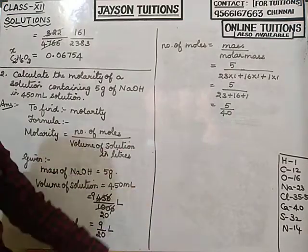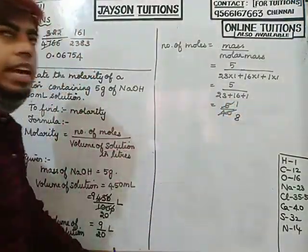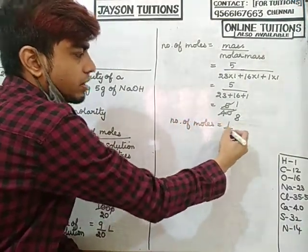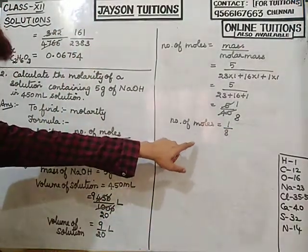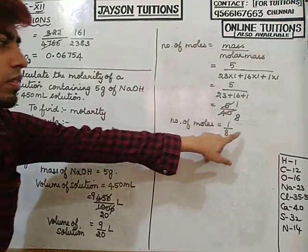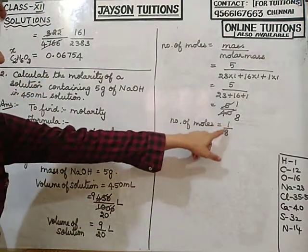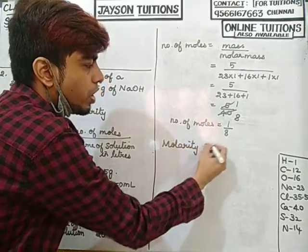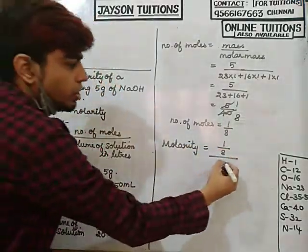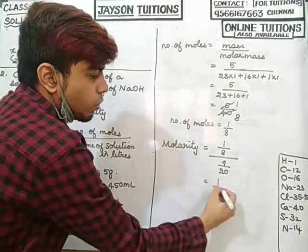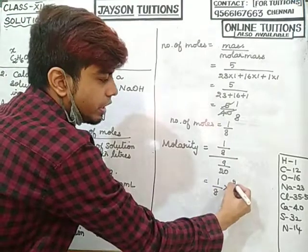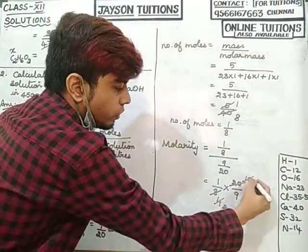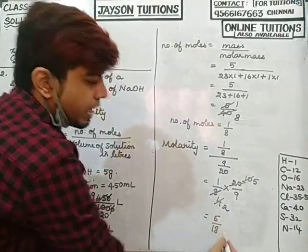5 divided by 40 simplifies to 1/8. So number of moles of NaOH = 1/8. Now calculating molarity: molarity = (1/8) ÷ (9/20). Dividing by 9/20 is the same as multiplying by 20/9, giving (1 × 20)/(8 × 9) = 20/72 = 5/18.